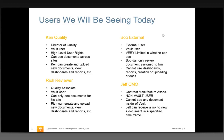The third person is Bob External — an external user who doesn't work for the same company as Ken and Rich. Rather, he works for a third party, but they work with him enough to give him a Vault username and password. Being external, we're going to make him very limited in what he can see — probably only one or two pieces of content. He can only review; he can't see dashboards, can't run reports, and can't create or upload things.